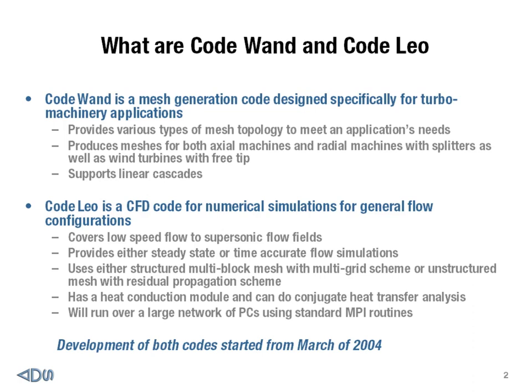It covers flow regimes from very low speed to supersonic flow, all the way up to Mach 3.5. When I talk about low speed, we're really talking about Mach 0.01 type of Mach number. It can do both steady-state as well as time-accurate flow simulations, which is very important for unsteady simulation of rotor-stator interactions.